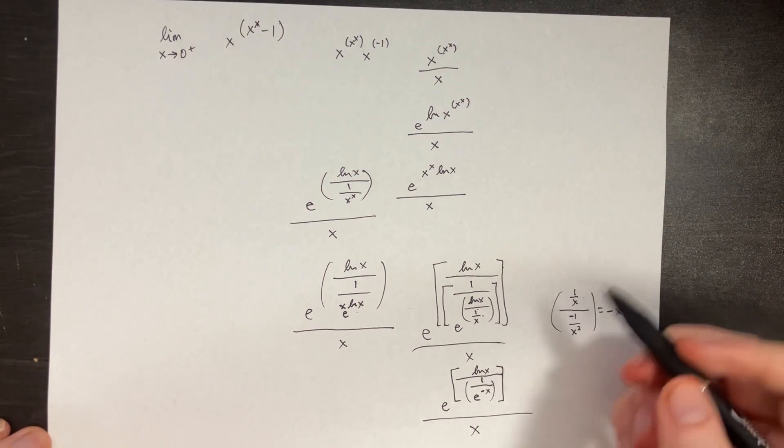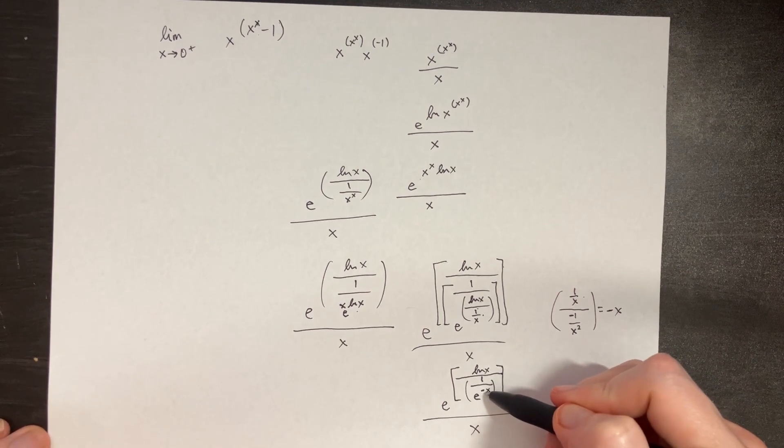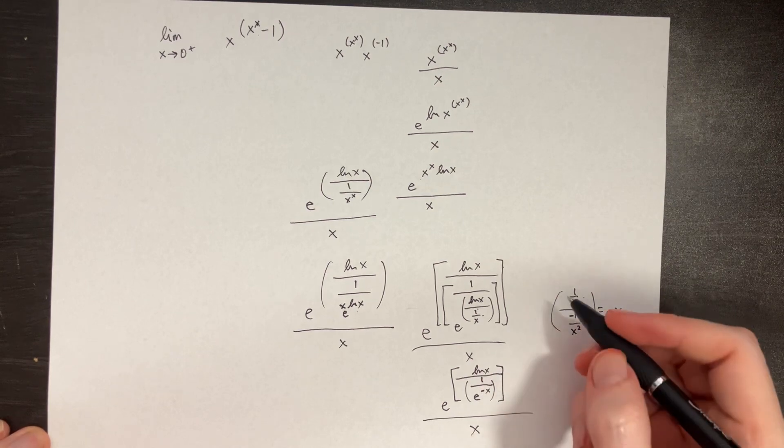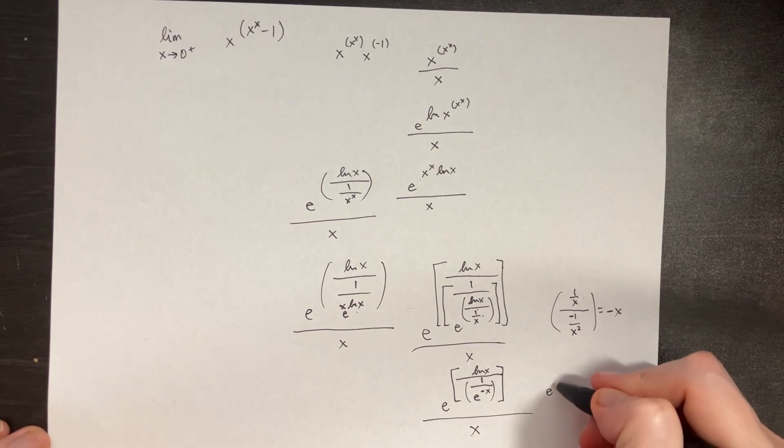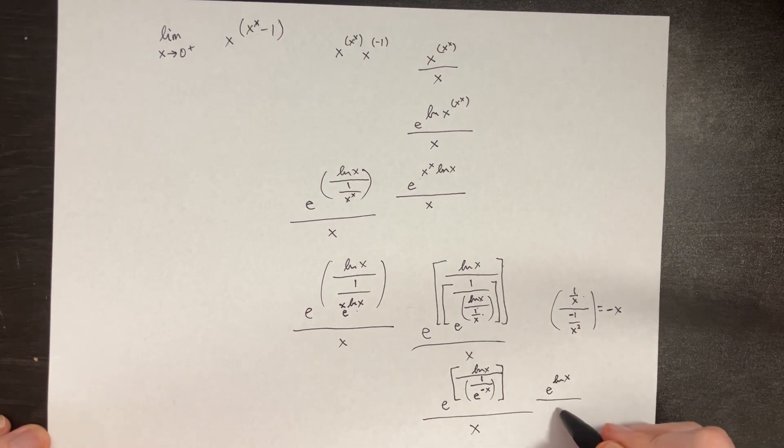And if we send 0 into this, then we get something like 1 on the bottom. 1 over 1 is just 1. That's pretty cool, because then we get something like e to the ln of x divided by x.